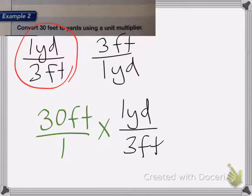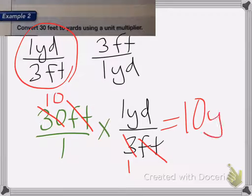Okay, so my feet cancel and I'm left with 30 over 1 times 1 yard over 3. So I'm going to cancel again. 3 becomes a 1, 30 becomes a 10. So I'm ending up with 10 over 1 times 1 yard, which is equal to 10 yards.